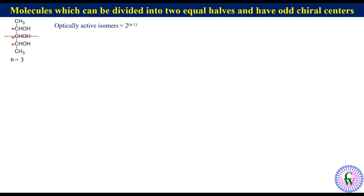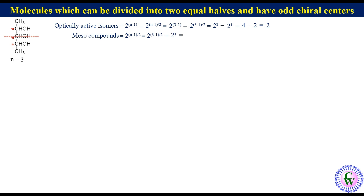The number of optically active isomers will be equal to 2 raised to the power n minus 1, minus 2 raised to the power (n minus 1)/2, which equals 2 raised to the power 2 minus 2 raised to the power 1, which equals 4 minus 2, which equals 2. The number of meso compounds will be equal to 2 raised to the power (n minus 1)/2, which equals 2 raised to the power 1, which equals 2. So the total number of optical isomers will be 2 plus 2, which equals 4.